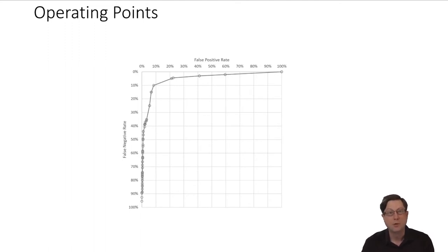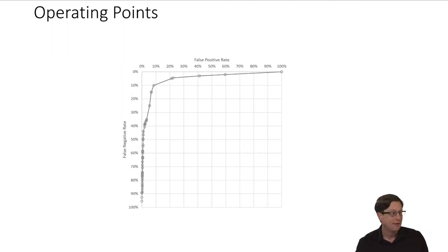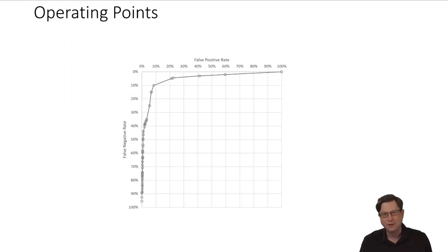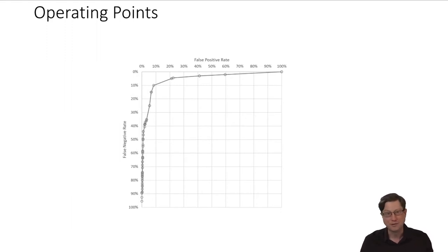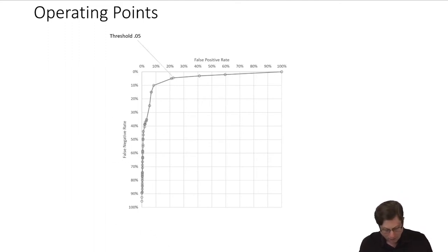Now let's talk about operating points. An operating point is the trade-off you'd like to achieve in your application. It often comes through discussion with a program manager, whoever is taking the customer's point of view, or whoever's building the user experience, or through customer feedback — like, this thing is triggering too much or my spam isn't being caught. Once that conversation is done, you might have an operating point such as: we need to keep our false positive rate less than 3%. That's a product requirement, and now you go build a model that accomplishes it. With a threshold of 0.05, you can read off the false positive rate and false negative rate from the ROC curve and say, yes, that operating point is achievable.